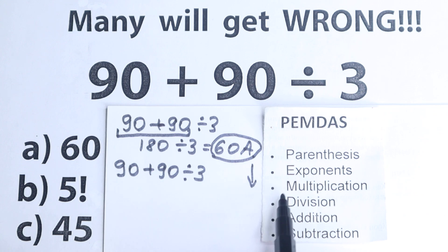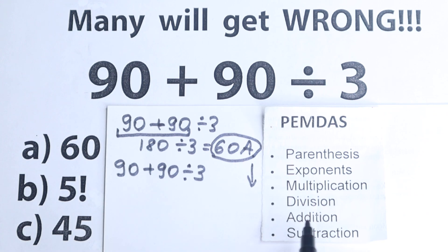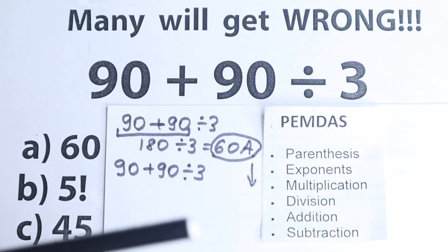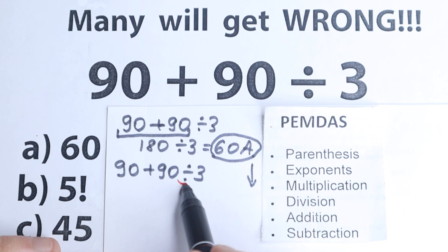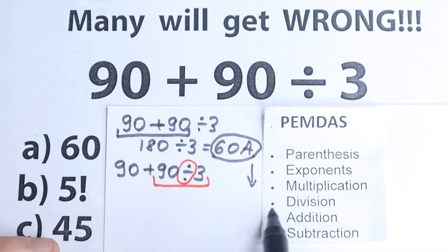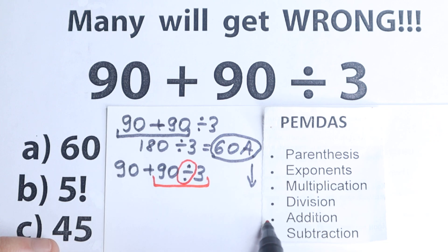What is the next step? The next step is multiplication and division. And if we look closely to our question, we can easily see that right here we have one division sign. So we need to start from this division because division is before addition. As you can see right here, division is before addition.